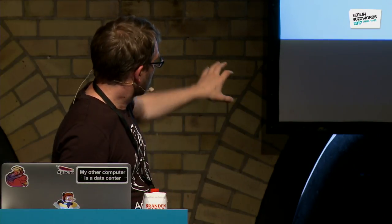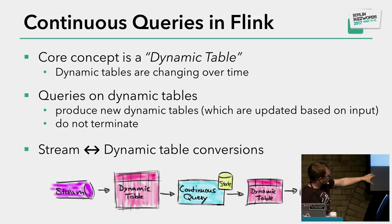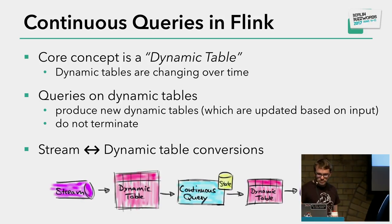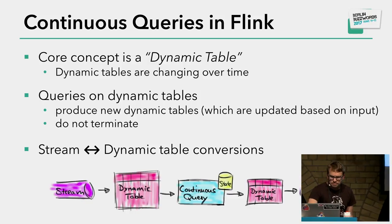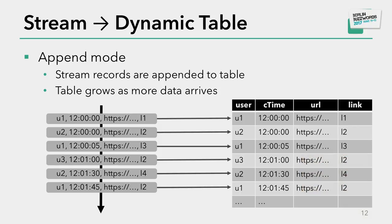It basically looks like this: the stream is logically converted into a dynamic table, then we define and run the continuous query which produces a new dynamic table, and this result table is converted back into a stream. One way to convert a stream into a dynamic table is the append mode, where each event arriving on the stream is simply appended to the dynamic table. This dynamic table continuously grows as more data arrives.